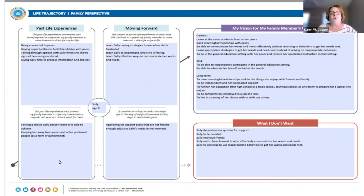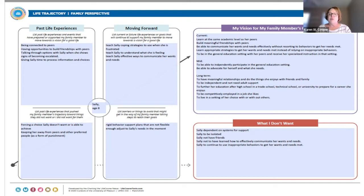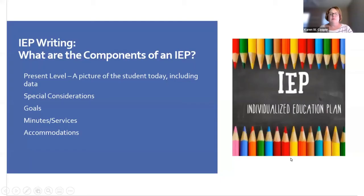Moving forward, we need to teach Sally coping strategies to use when she is frustrated, teach her to understand what she is feeling, and teach her effective ways to communicate. We want to stay away from a rigid behavior support plan that is not flexible enough to adjust to Sally's needs in the moment. It's a really nice way to organize your thoughts and have that discussion with your team so we can implement the appropriate services and support.